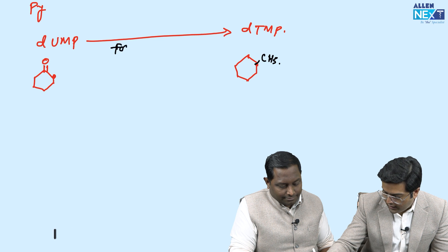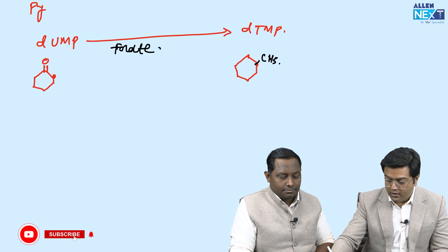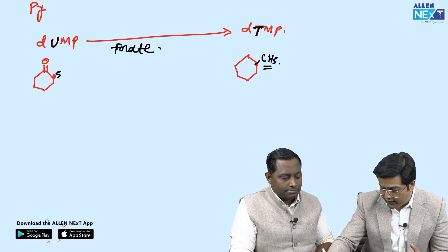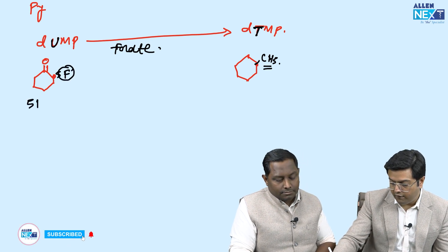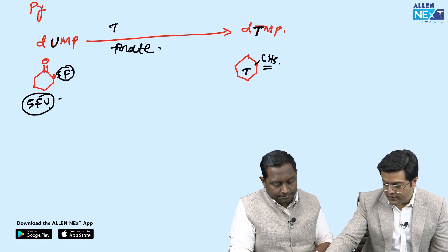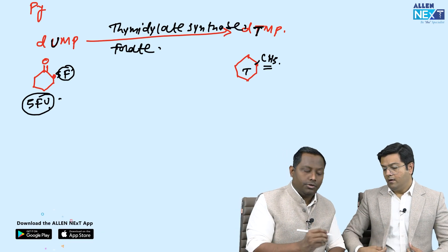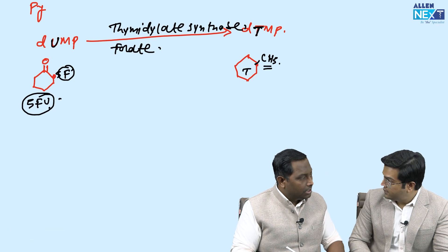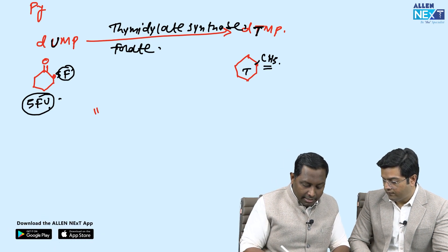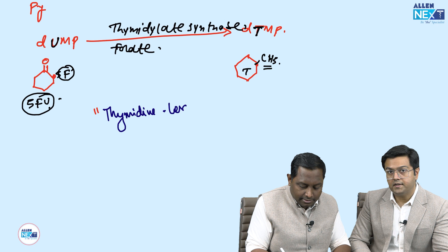The methyl group is added to the fifth carbon of uracil using folate as a methyl group donor, converting uracil to thymidine. The enzyme that does this is thymidylate synthase. Now if we put a fluorine atom at the fifth position instead — that is our 5-fluorouracil. It cannot be converted to thymidine, so it inhibits thymidylate synthase.